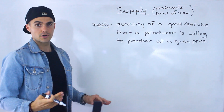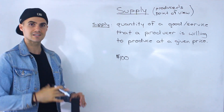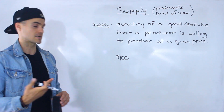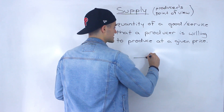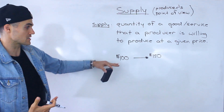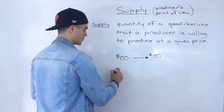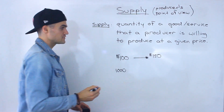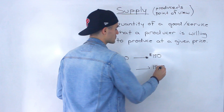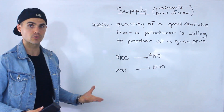Let's say that you're a producer making a product and selling it in the market. Right now your product is selling for $100, and you're producing some quantity of it. Let's say there's a change in the market and the demand for your product increases, so now you can sell it for $150. The price going from $100 to $150 gives you more incentive to produce more — maybe you'll increase that quantity from 1,000 to 1,500 units. As a producer, you're trying to maximize profit, so selling more at a higher price increases your profit.